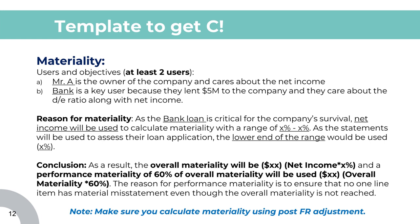For an additional mark, make sure you also talk about performance materiality, which is a portion of overall materiality, usually within the 60 to 80 percent range. Pick a number, multiply overall materiality by that amount, and show your work. If you're not sure what performance materiality is, my advice is to read a perfect solution for any audit planning memo case, see how they talked about it, take their wording, shorten it a little, and use it for every single case going forward.